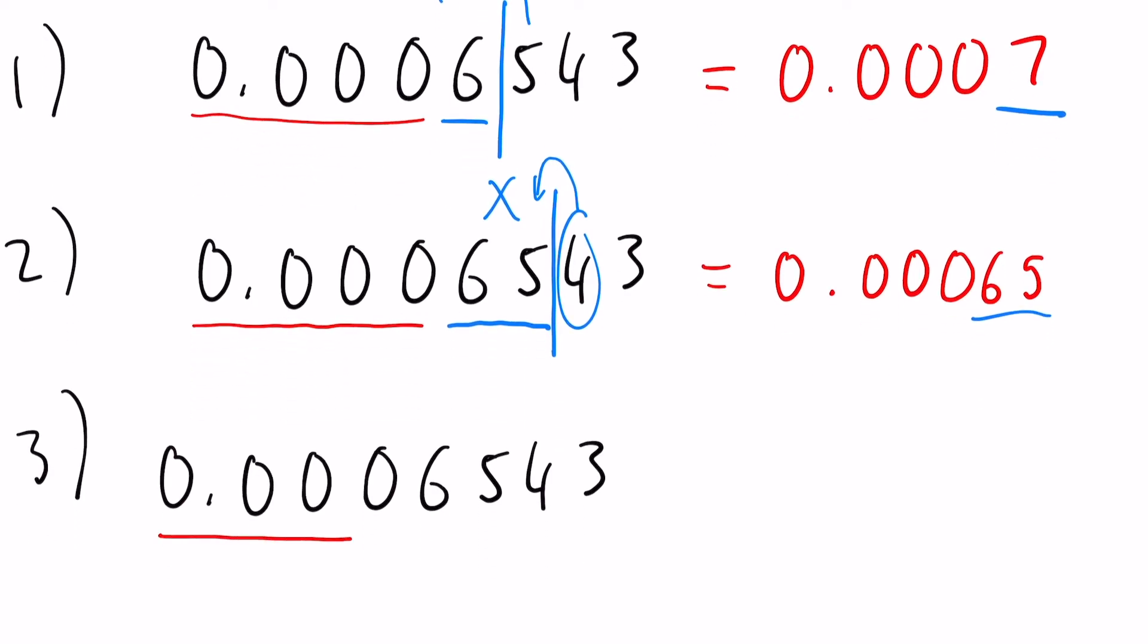Okay, for our final one, again cut off the zeros, 654 this time, draw that line in afterwards and the three is less than five so that four is going to stay the same, leaving us with 0.000654, and again three significant figures.